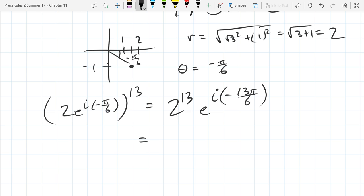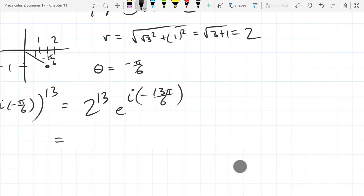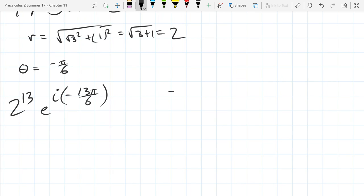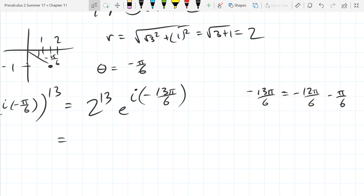We are doing a full lap around the unit circle, a negative lap. So if we remember, between π over 6 is negative 12π over 6 minus π over 6. So it will have the same coordinates as negative π over 6.